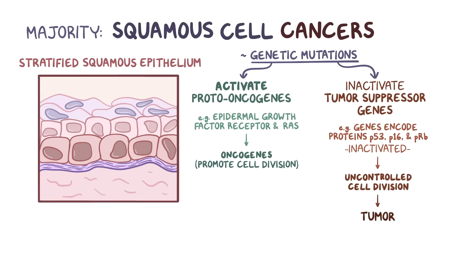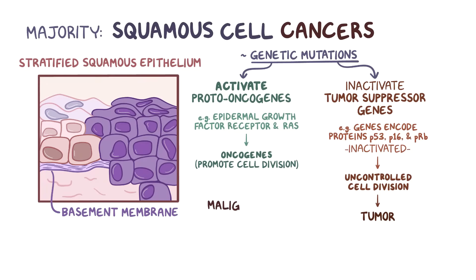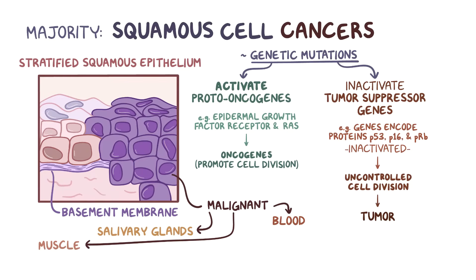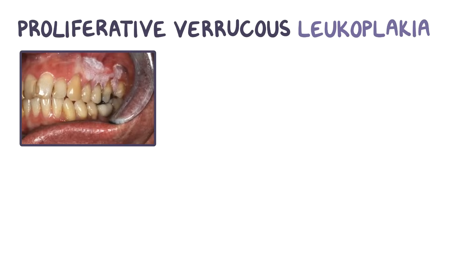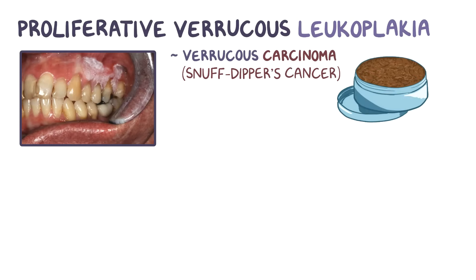As the cancer cells divide, they can sometimes gain the ability to penetrate through the basement membrane, and at that point it's considered a malignant tumor. The malignant cells then invade surrounding tissues like the salivary glands, muscle, and even get into the blood and lymphatic systems, and metastasize or travel to other areas of the body. Proliferative verrucous leukoplakia can turn into a particular type of squamous cell cancer called verrucous carcinoma, also sometimes called snuff-dipper's cancer since it's more common among users of snuff and other forms of chewing tobacco.